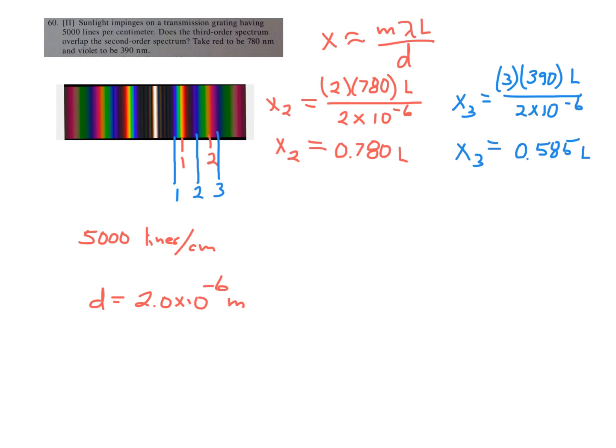In fact, if you look at the math here, because it's half the wavelength, the second order blue, or violet, should actually be right on top of the first order red, simply because it's half the wavelength. You can kind of see the math there. So that would be a complete matchup.